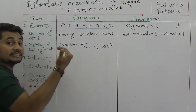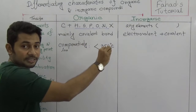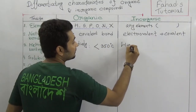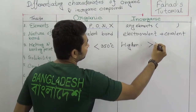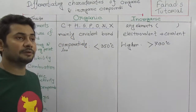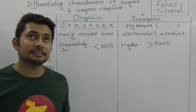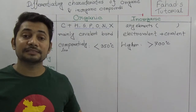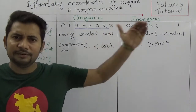So the melting and boiling points of organic compounds are comparatively low. For inorganic compounds they are comparatively higher — more than 700 degrees Celsius. For example, the melting point of sodium chloride (table salt) is 801 degrees Celsius, and the boiling point of table salt is 1465 degrees Celsius.